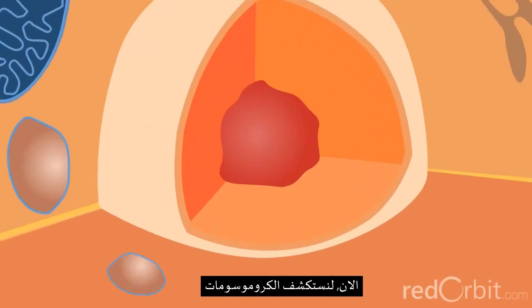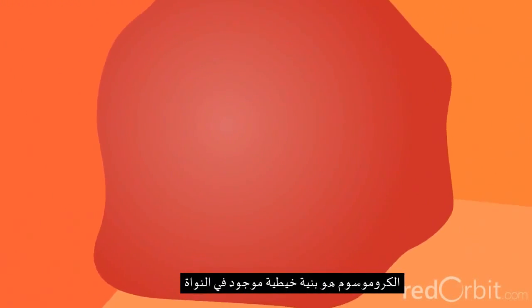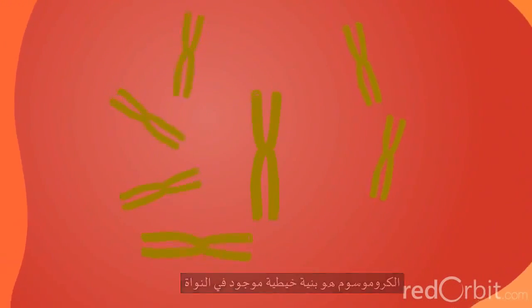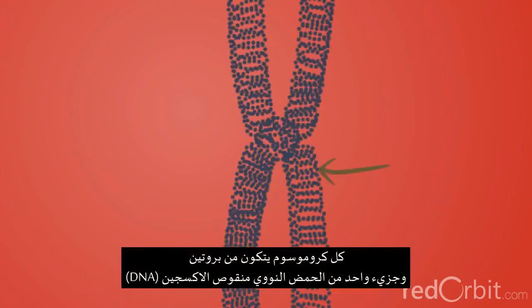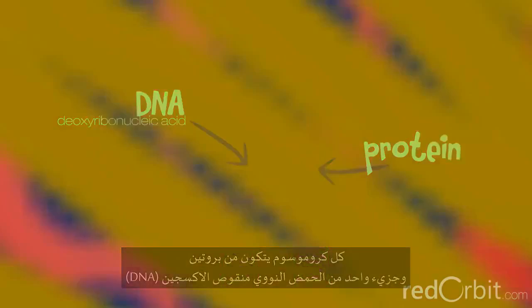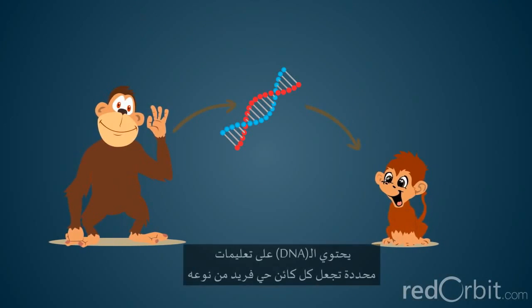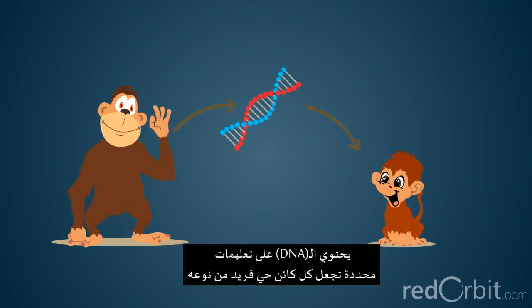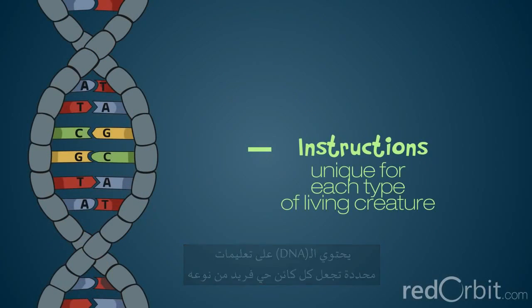Now let's explore chromosomes. Chromosomes are thread-like structures located inside the nucleus of animal and plant cells. Each chromosome is made of protein and a single molecule of deoxyribonucleic acid, or DNA. Passed from parents to offspring, DNA contains the specific instructions that make each type of living creature unique.